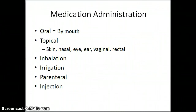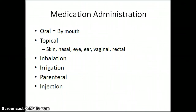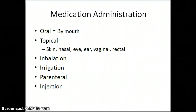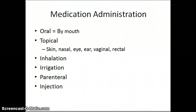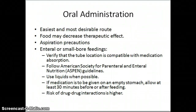With medication administration, we will be doing the oral route — by mouth, written as PO or per os. Topical can be into any of the orifices: the skin, nose, eyes, ears, vagina, and rectal area. Inhalation is the lungs via inhalers and breathing treatments. We irrigate many things in the body — the eyes, vagina, rectum. Parenteral includes IM injections, intramuscular, intradermal, and subcutaneous. Each route comes with special instructions, and the next section will include very specific directions for those.